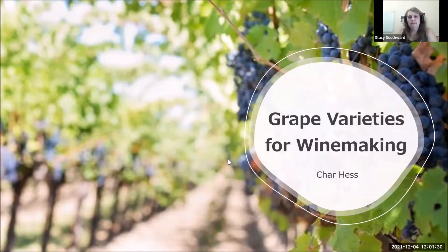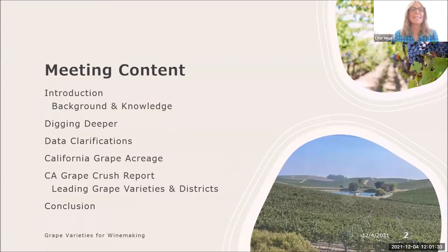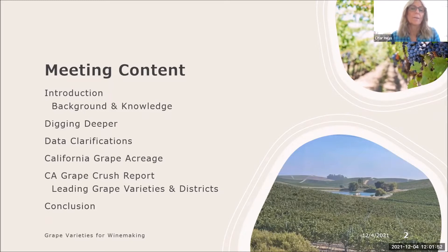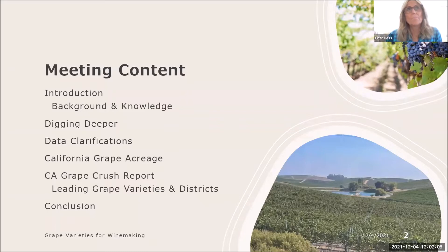Grape varieties for winemaking. Here's the content. I'm going to give you a little introduction, my background and knowledge of how I found out about everything that I know. We'll dig a little deeper into some of the details, data classification, clarifications. This is all about California grape acreage, California grape crush report, leading grape varieties, and districts. The conclusion at the end is very important and why I'm giving you all this information to begin with. I'm going to be training this whole month, starting from the very beginning, working my way up to different marketing and different aspects.